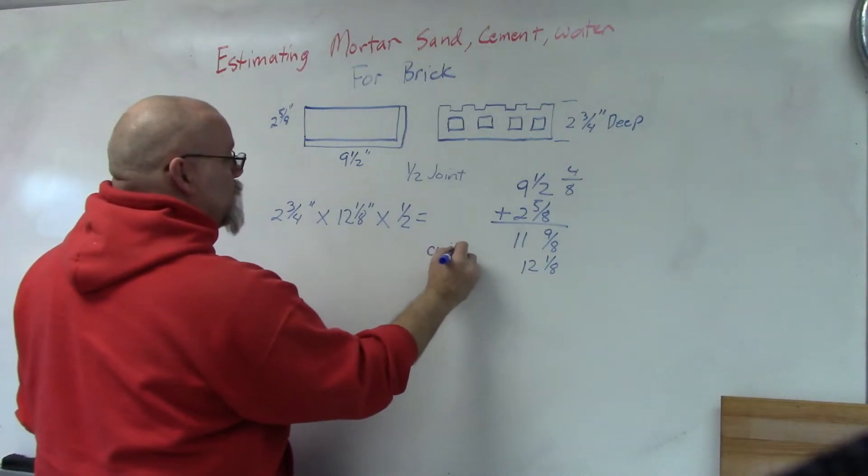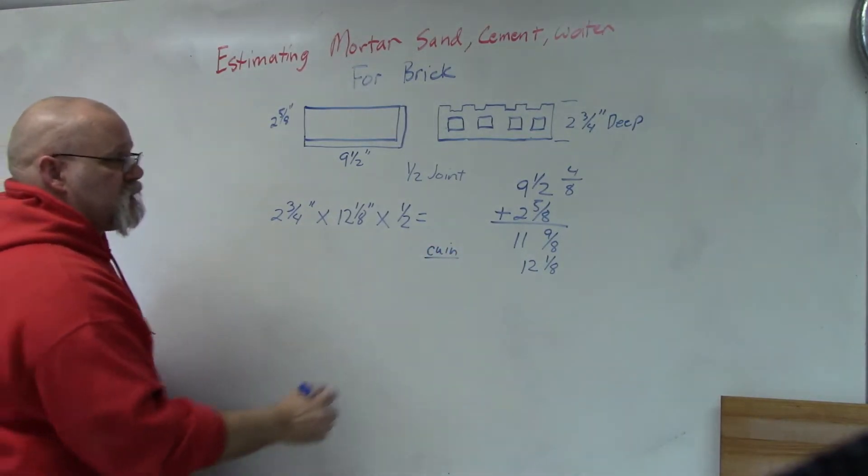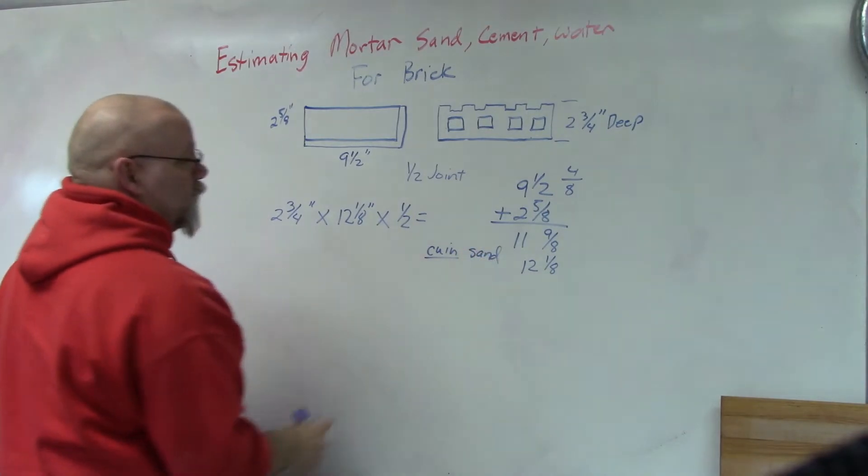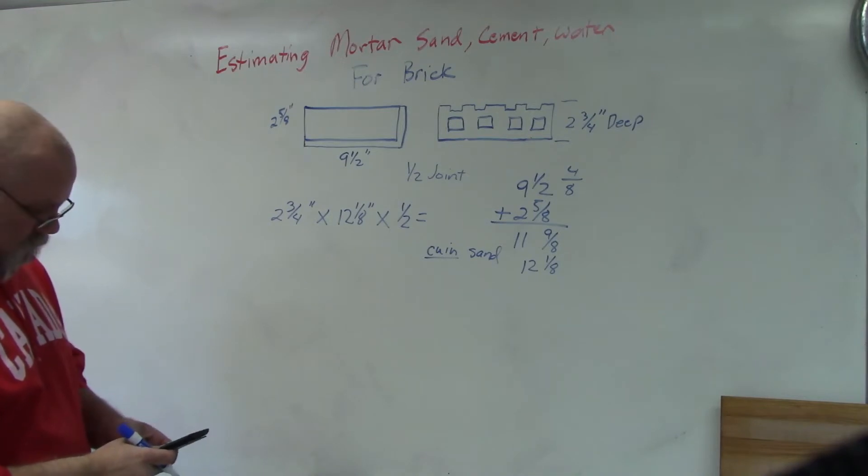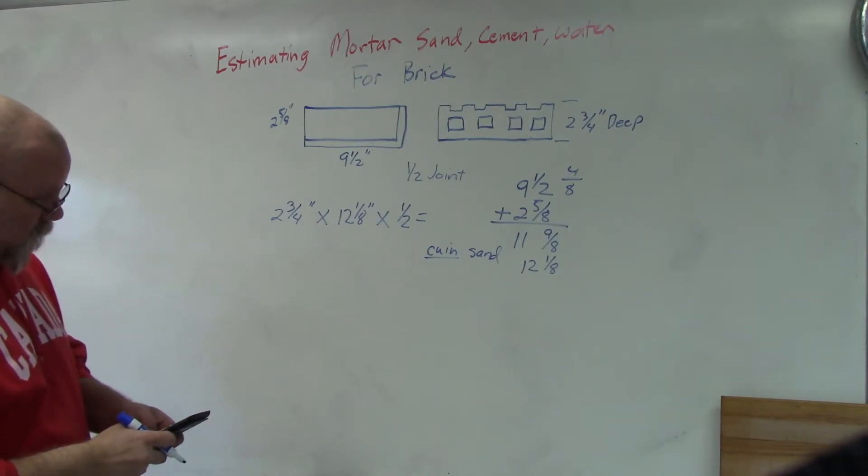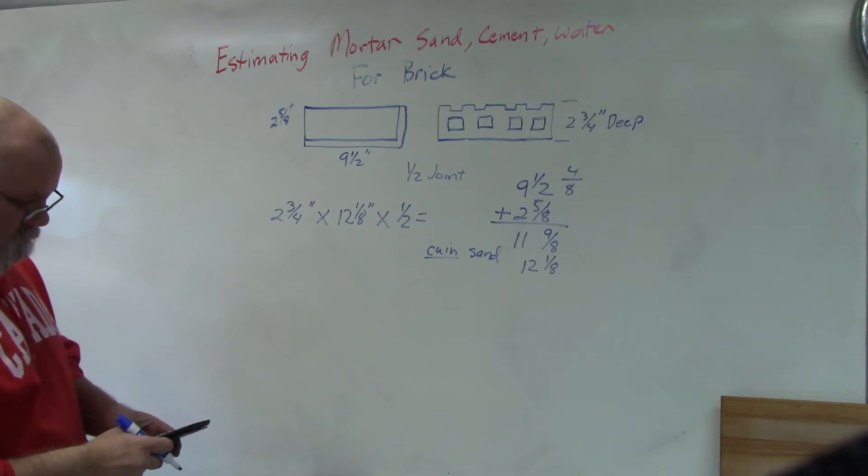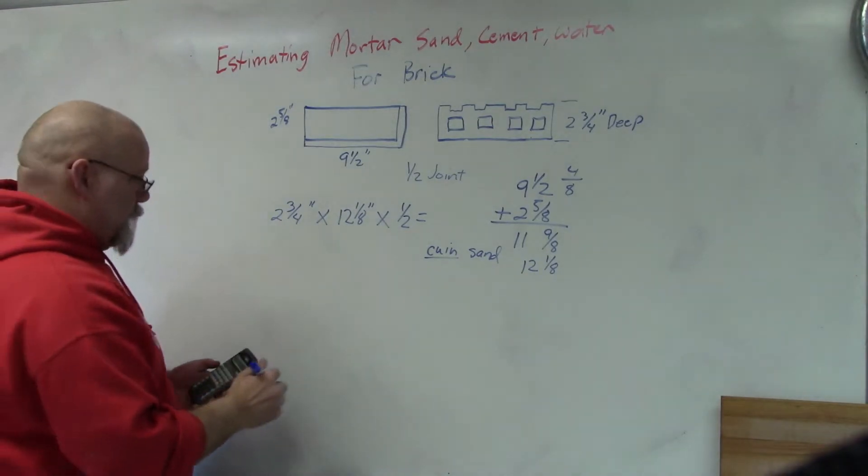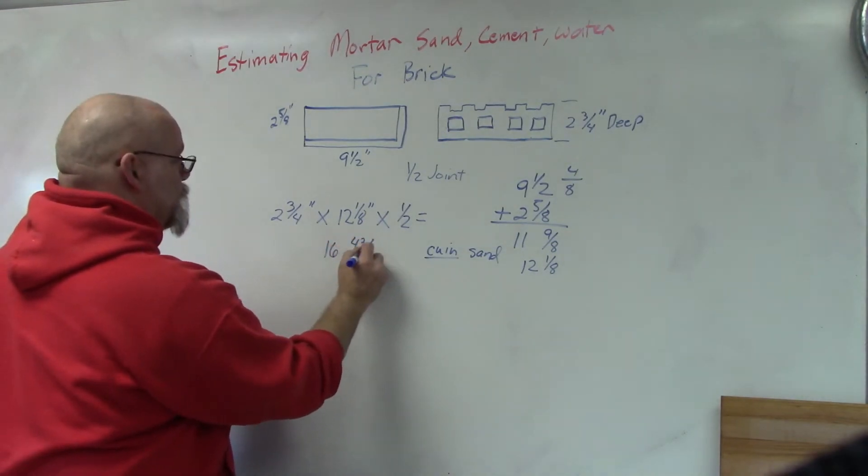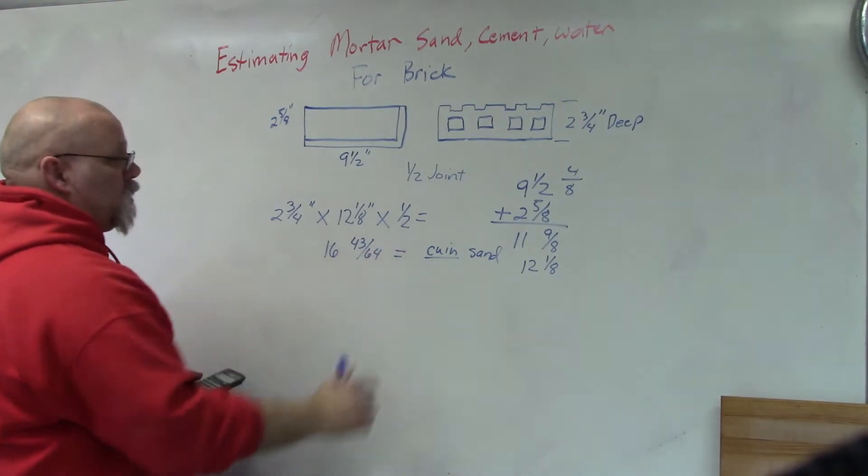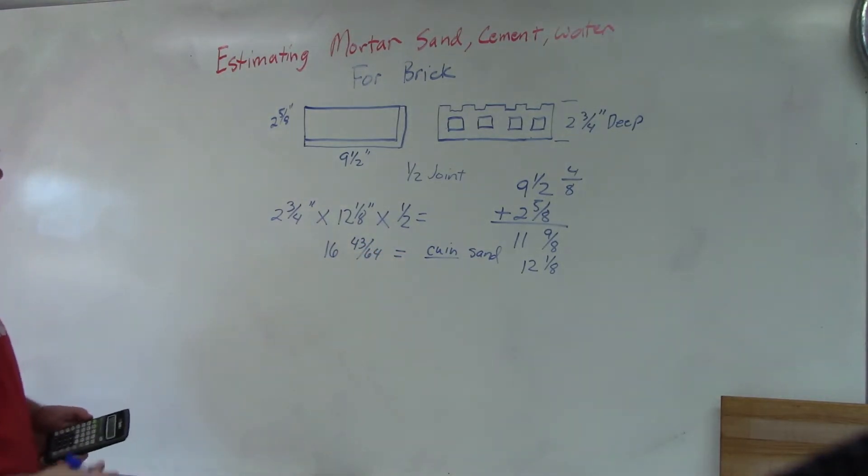And then I need to know the thickness of my joint, so that's a half an inch. I'm going to multiply these together and figure out how many cubic inches of sand that I need. So 2 and 3/4 times 12 and 1/8 times 1/2. I get a fraction of 16 and 43/64 cubic inches.